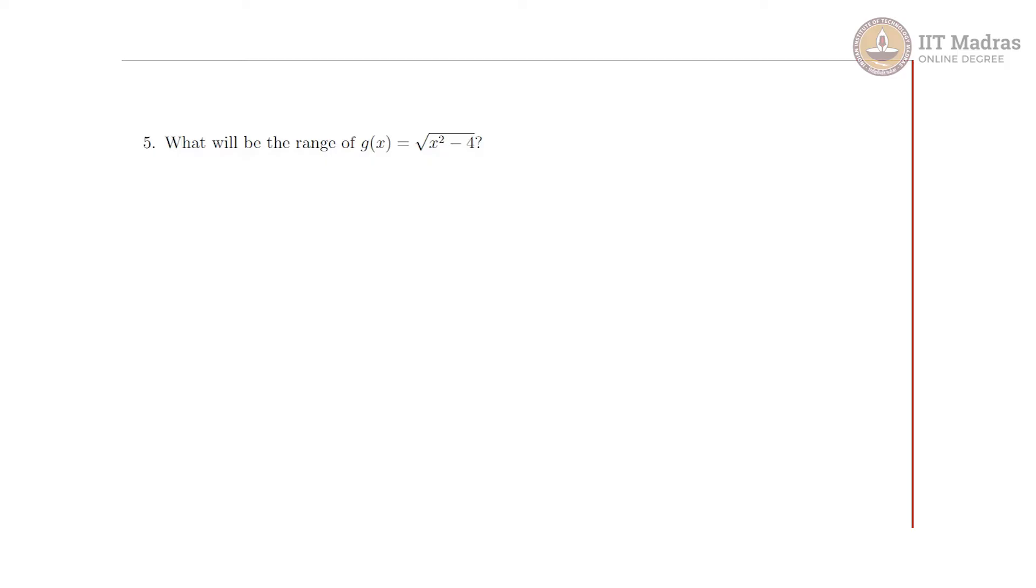For our fifth question we are supposed to find the range of a function g(x) which is √(x² - 4). You can understand that this function is actually not defined at x equal to, I mean in the domain of x equal to minus 2 to 2.